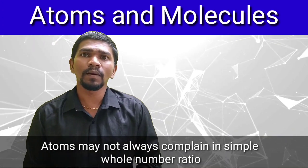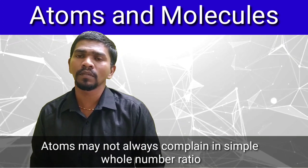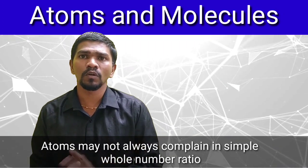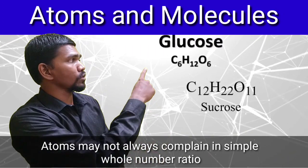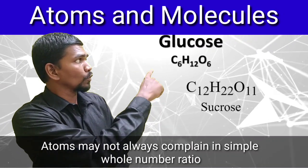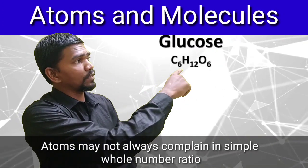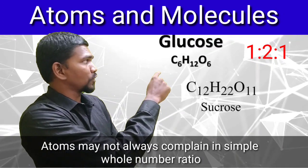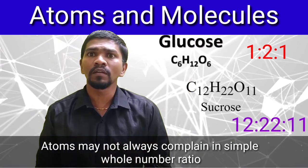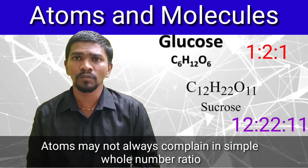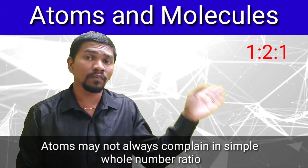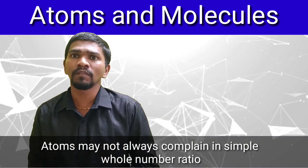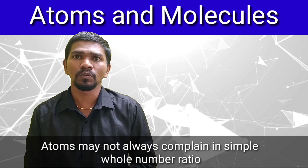Atoms may not always combine in simple whole number ratios. All atoms of one element join to form a molecule. For example, glucose is C6H12O6, which gives a ratio of 6:12:6, simplifying to 1:2:1. Sucrose is C12H22O11, giving a ratio of 12:22:11, which does not simplify to a simple whole number ratio. So atoms may not always combine in simple whole number ratios.